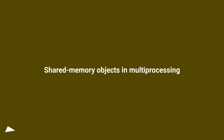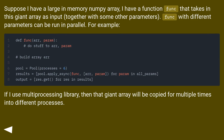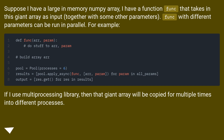Shared memory objects in multiprocessing. Suppose I have a large in-memory numpy array. I have a function func that takes in this giant array as input, together with some other parameters. Func with different parameters can be run in parallel. For example, if I use the multiprocessing library, then that giant array will be copied multiple times into different processes.